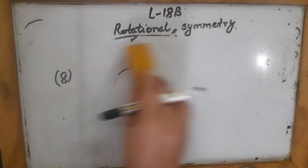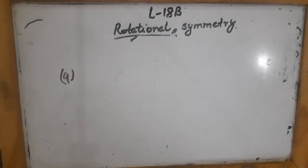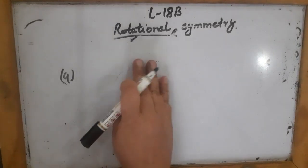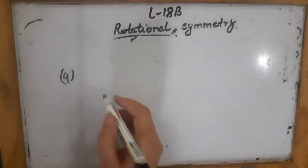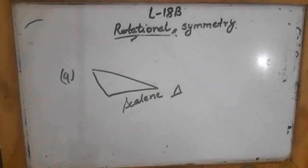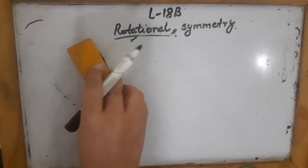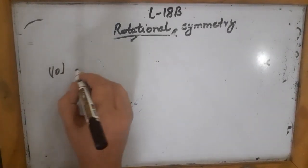Question 9: give an example of a geometrical figure which has neither a line of symmetry nor rotational symmetry. A scalene triangle has neither any line of symmetry nor any rotational symmetry — it will never look the same at any point during a complete rotation.